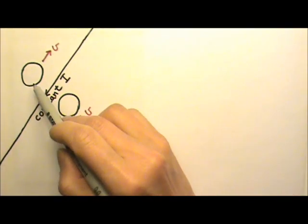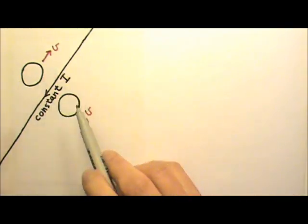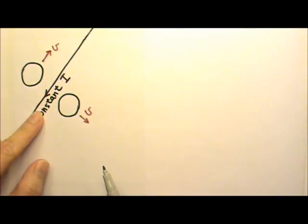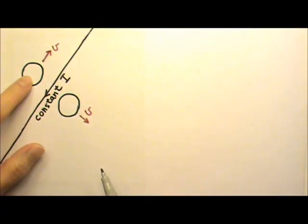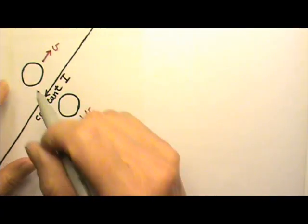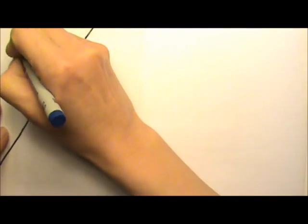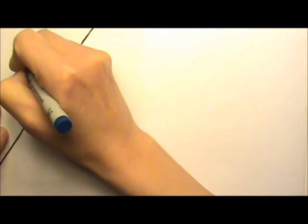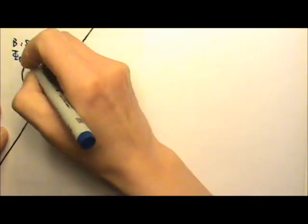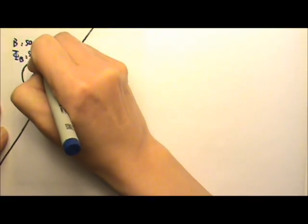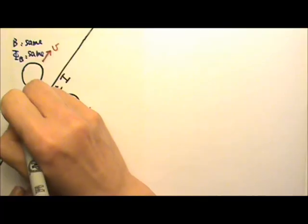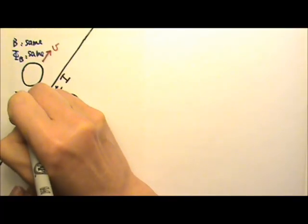This wire loop is being pulled that way, and it stays the same distance away from the long straight current. So the magnetic field through the loop stays constant — B stays the same. That means the magnetic flux through this loop also stays the same. Therefore, there is no induced current.